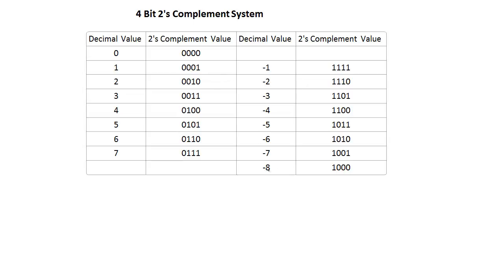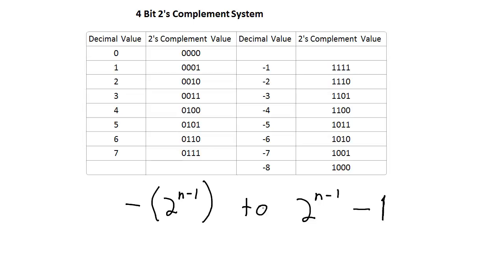The magnitude of the lowest negative number is higher than the magnitude of the highest positive number. In general, for any 2's complement system, we can represent numbers from negative 2 to the (n−1) up to 2 to the (n−1) minus 1, where n is the number of bits in the system. In this case with n = 4, that's negative 2 cubed (negative 8) up to 2 cubed minus 1 (positive 7), so from negative 8 up to positive 7.